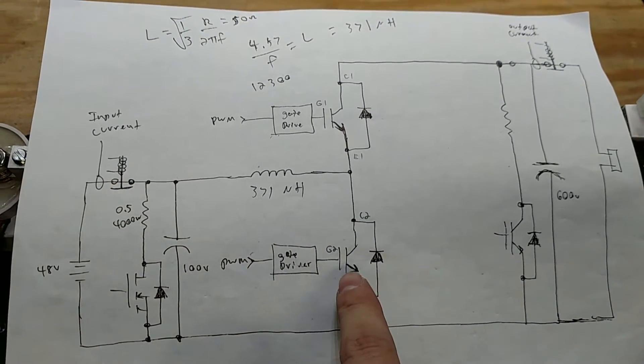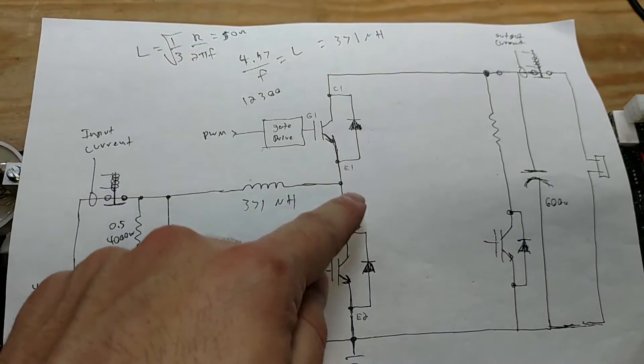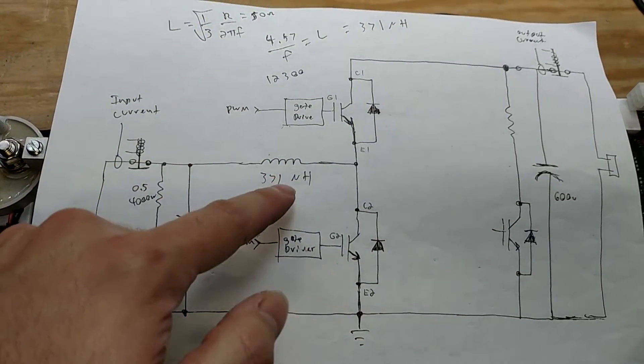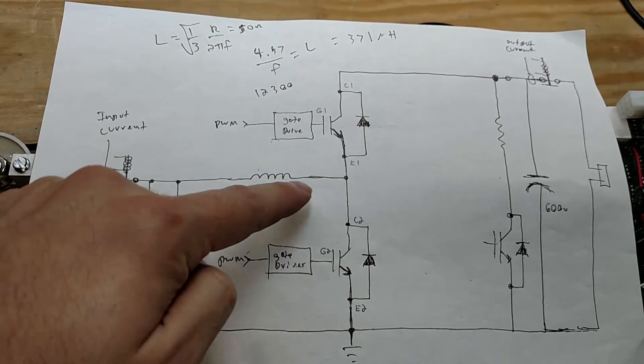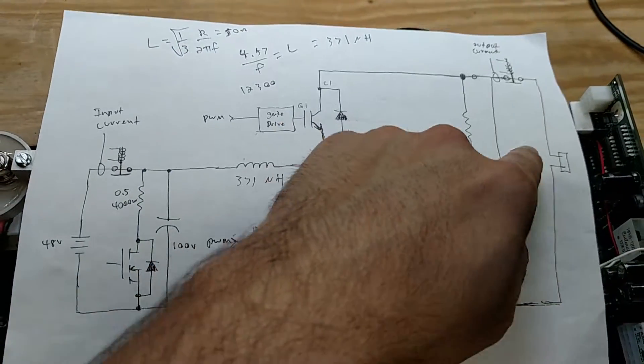we will turn this MOSFET on. We've got current coming out of the battery through the inductor, back here to ground, and we'll store energy in the inductor. When we turn this guy off, we can't go that way anymore, so we've got to come up through here, and we'll convert that to a higher voltage, and then that goes out.